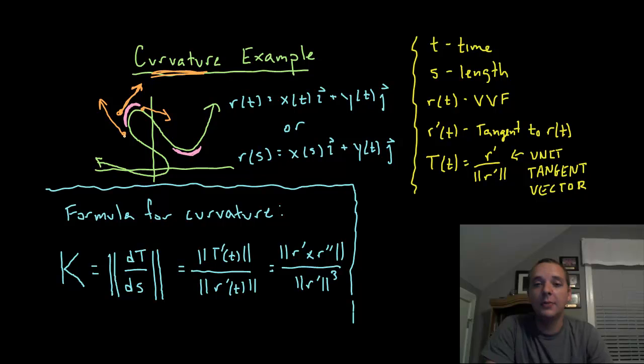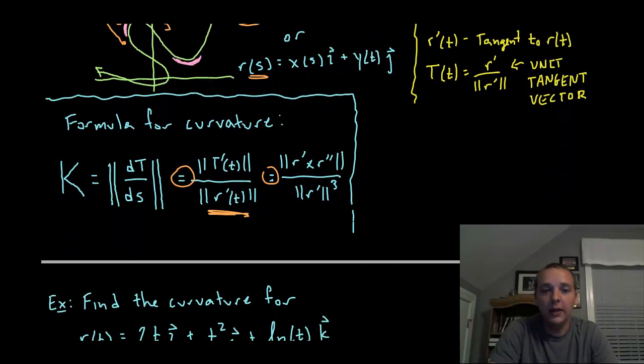The obvious practical problem is this: most vector valued functions are not written in terms of s, they are usually written in terms of t. So there are two alternate formulas that can also be used. Curvature is norm T prime divided by norm r prime, or norm r prime cross r double prime divided by norm r prime cubed. I'm not going to go through the derivations of those formulas.